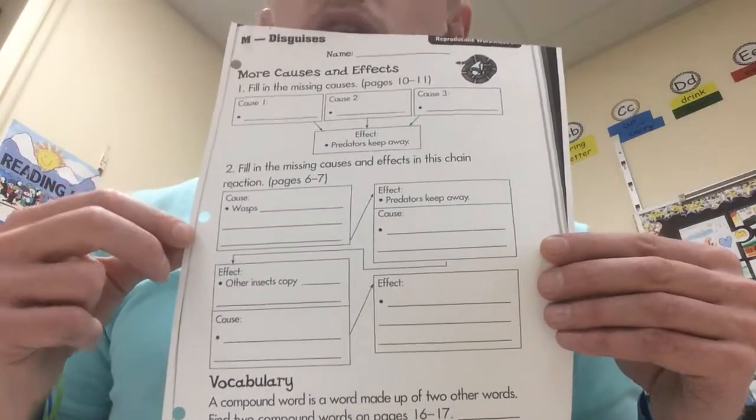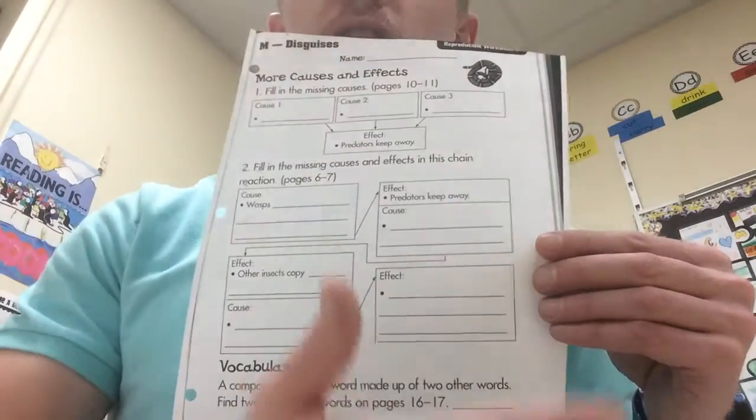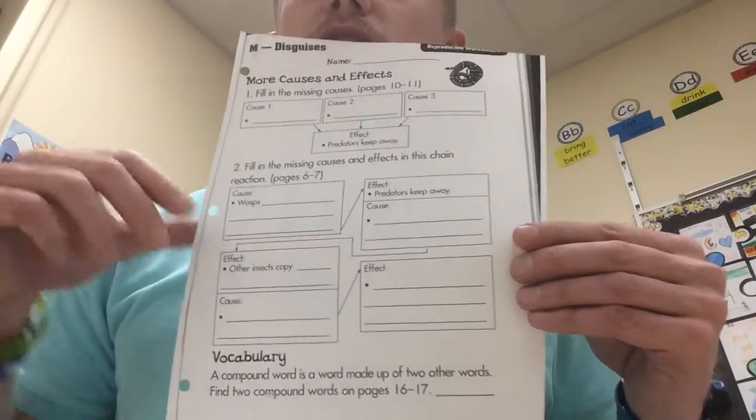That's why we call that a chain reaction. There is a cause and an effect. Then the effect becomes a cause for something else.